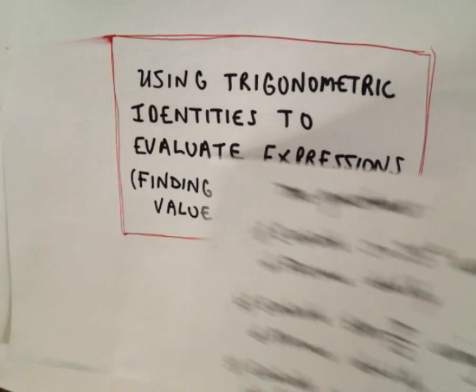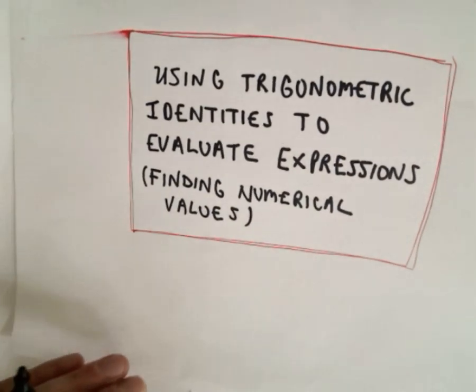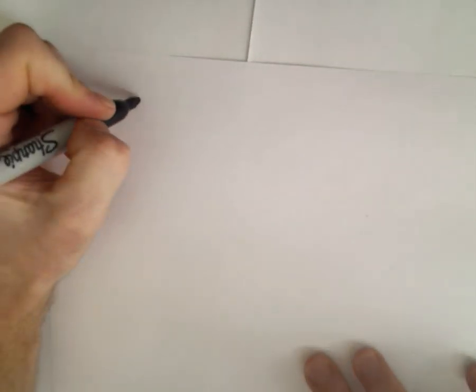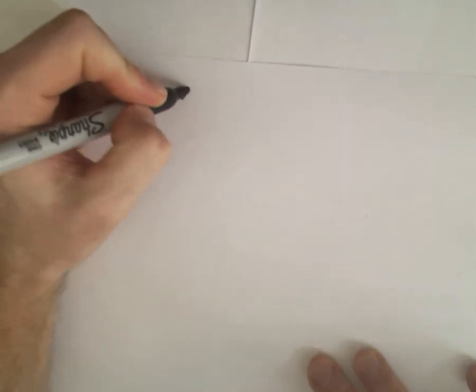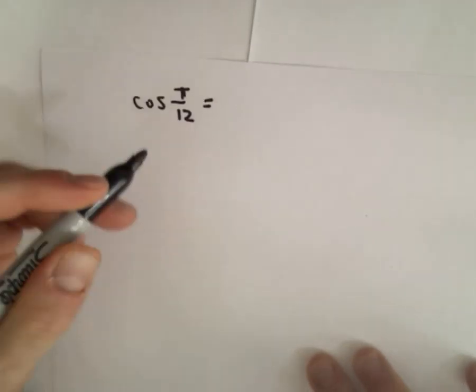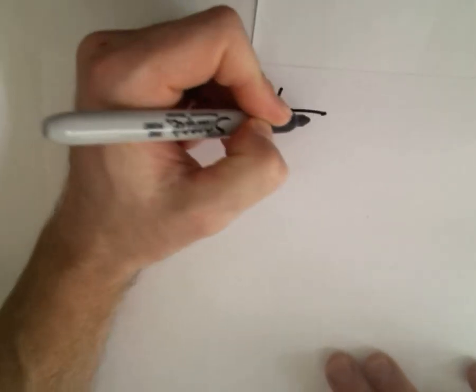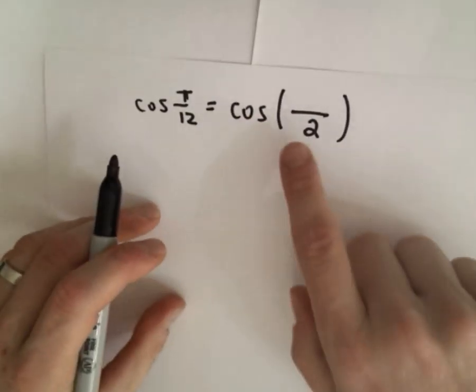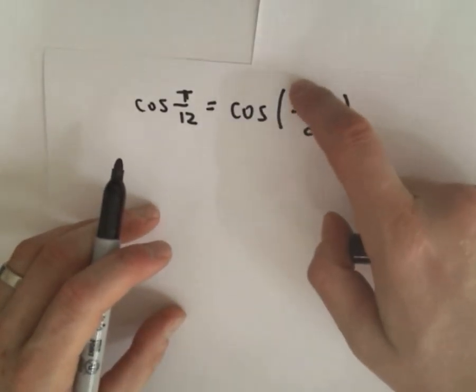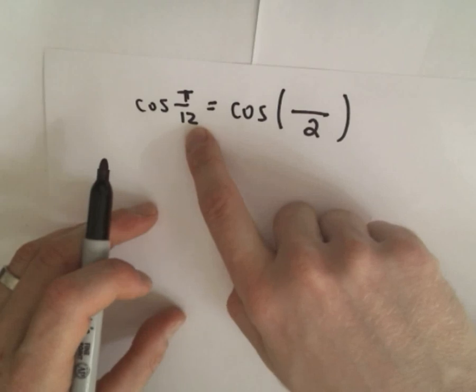Alright, so let's figure out cosine of pi over 12 here first. So here we want to use a half angle identity. So what that says is I want to have something divided by two, so something divided by two that gives me pi over 12.